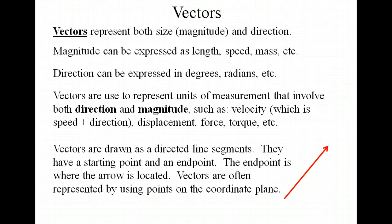Vectors are typically drawn as directed line segments. In other words, a line segment that has an arrowhead. The end point is where the arrowhead is located. Vectors are also often represented by using points on the coordinate plane.